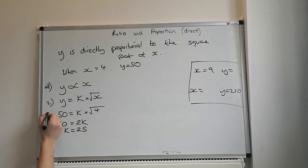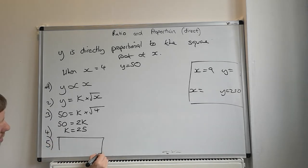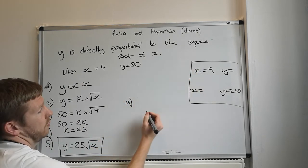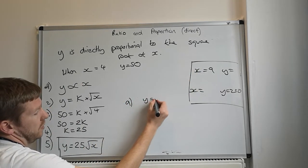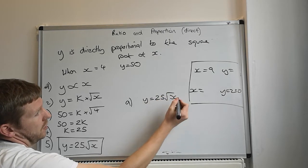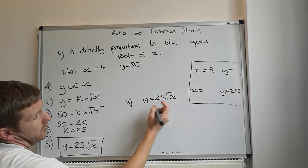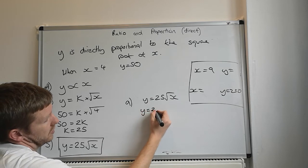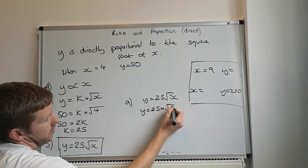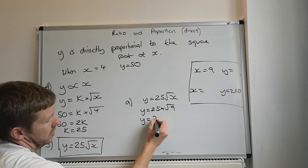So step three, substitute it in. Step four, work out what k is. Step five, rewrite your formula. So y is equal to 25 times the square root of x. Over here, so part a, this one here, we're using our formula, y is equal to 25 root of x. Substitute x equals 9, so y is equal to 25 times the square root of 9, so 25 times 3, 75.